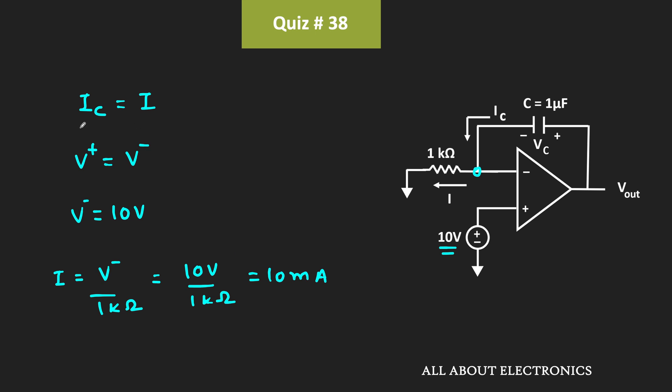From this equation, we can say that current IC is also equal to 10mA.